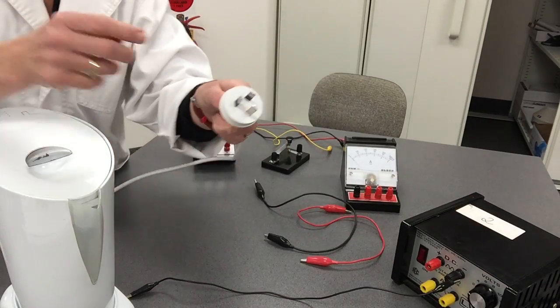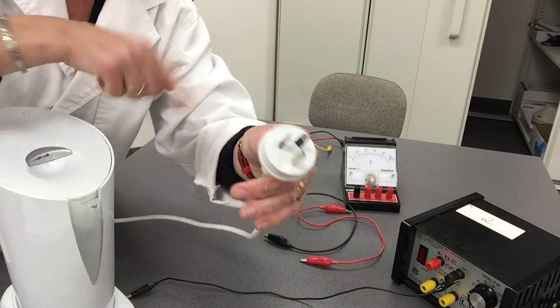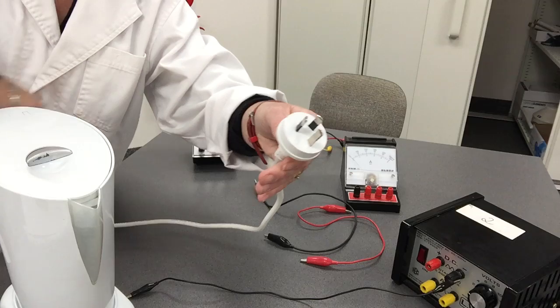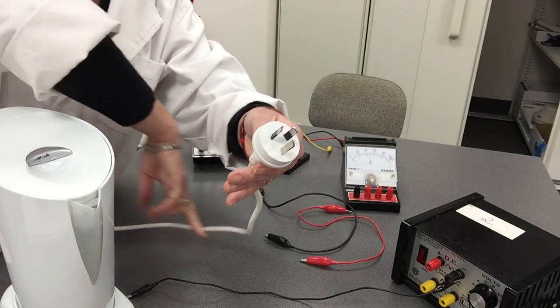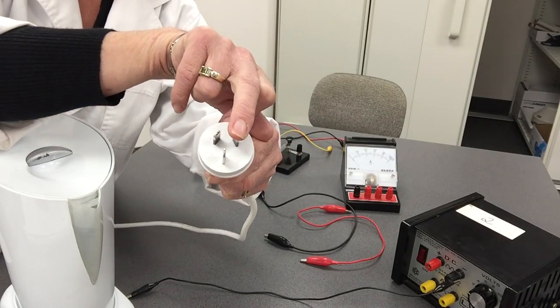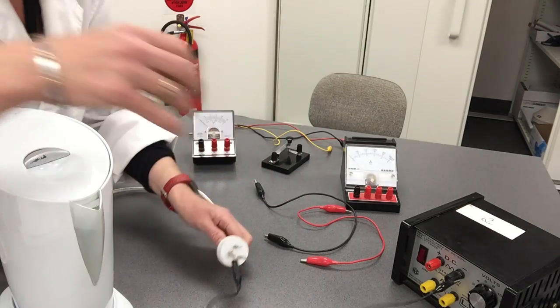We connect it around to our plug. What goes through our plug is it goes in through the line, through one of these top ones through to our kettle, and then it comes back out the other top plug which is your neutral.